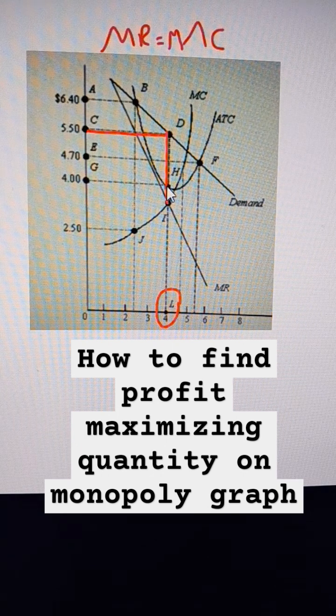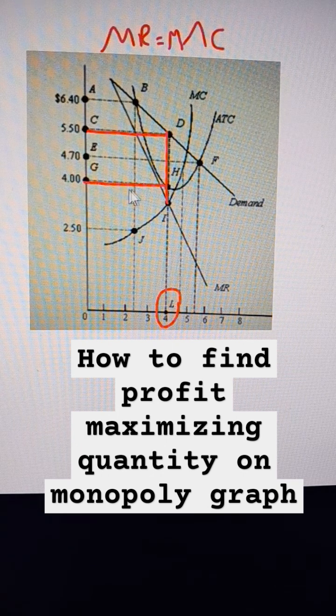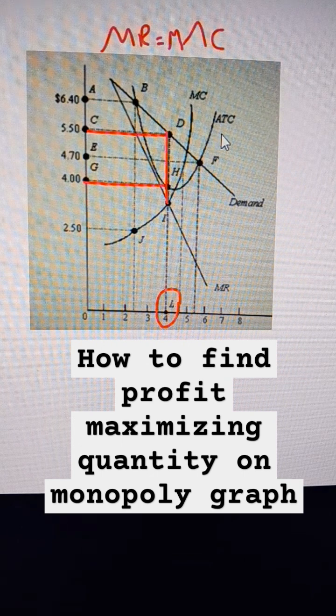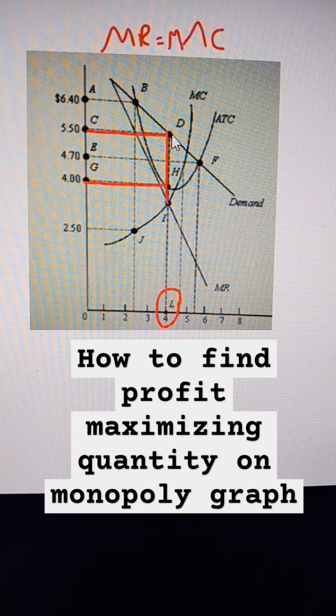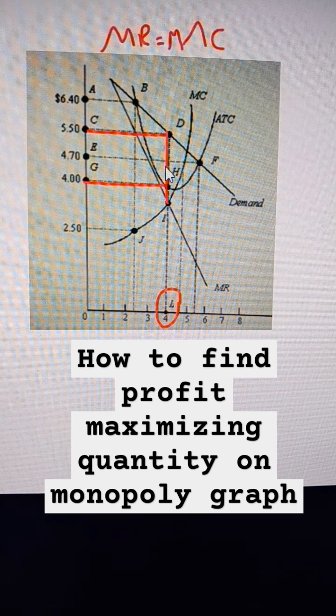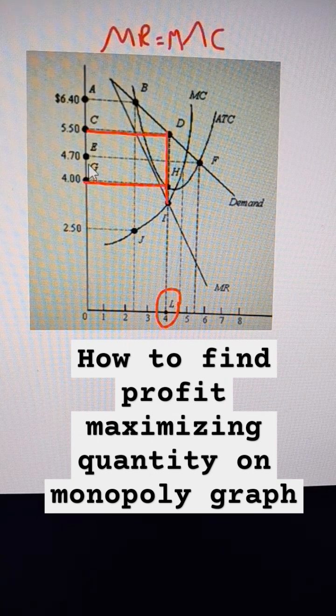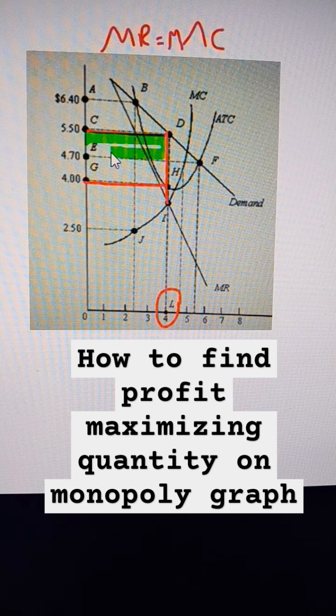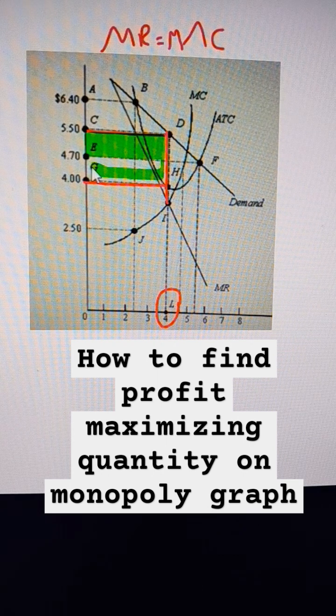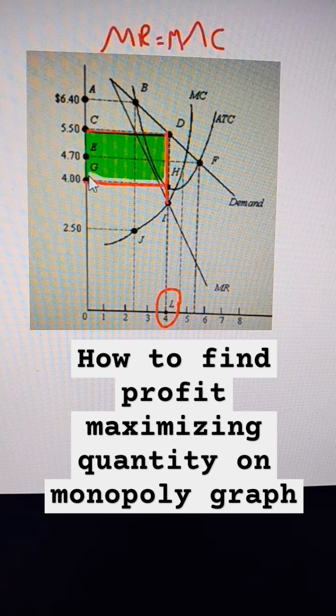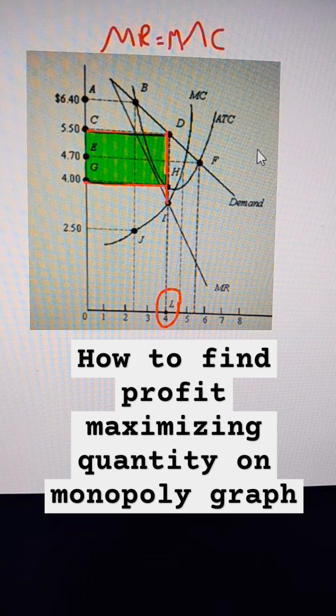And then finally, the profit is going to be, follow this down to where it hits average total cost. So it's going to be $1.50 per unit. We're going to multiply that by 4. It is also the area of this rectangle. That is the profit, and that is $1.50 times 4, so that would be $6.00 profit.